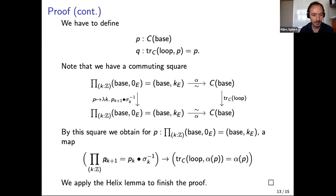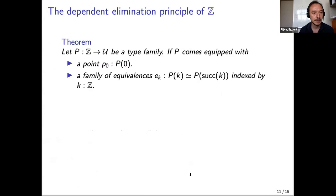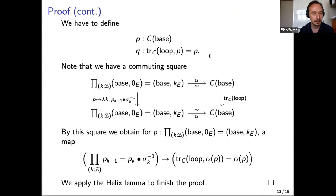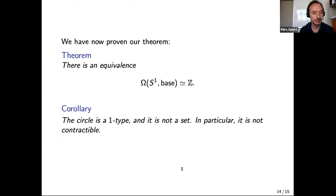But this we know how to prove because it was the second part of our Helix Lemma — tau is exactly of that type, giving for every k that identification with the computation rule. Therefore the proof is finished. The loop space of S¹ is Z. As a corollary, since E is a family of sets but not propositions (Z is not a proposition), the circle is a 1-type but not a set, and in particular not contractible, since contractible types are sets.